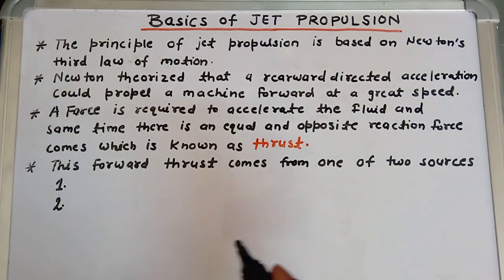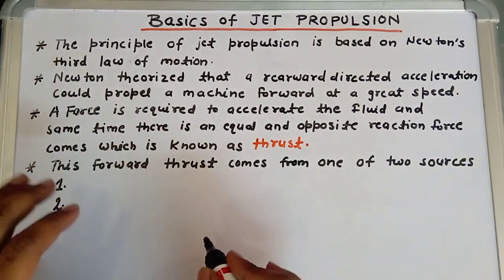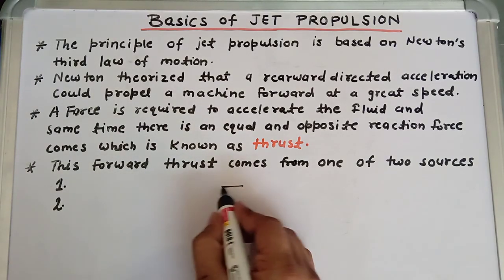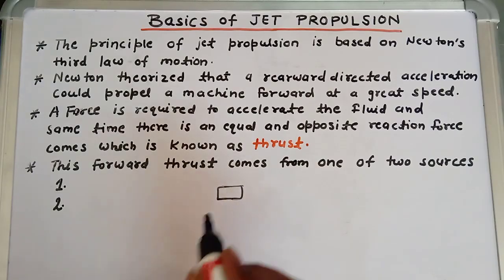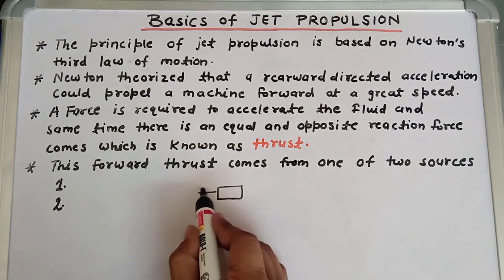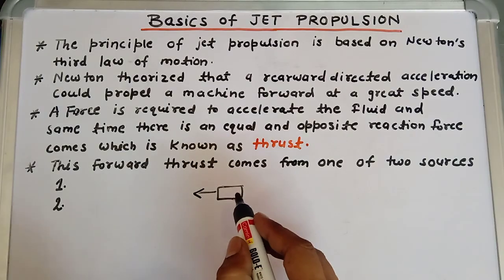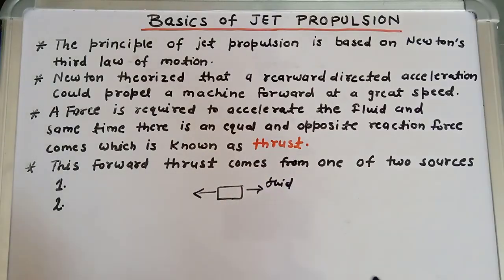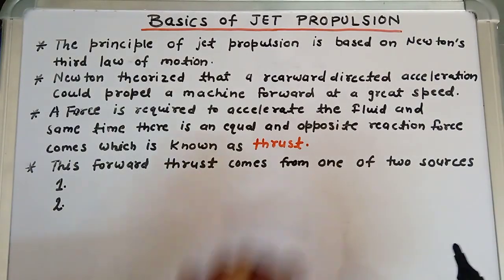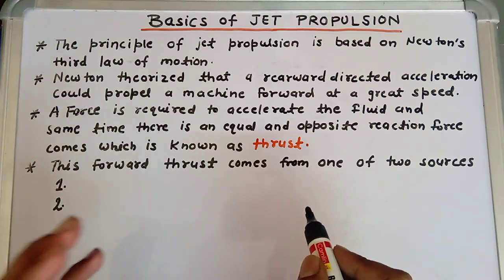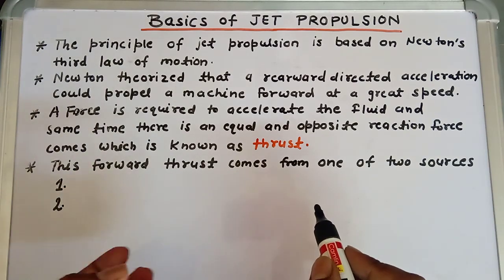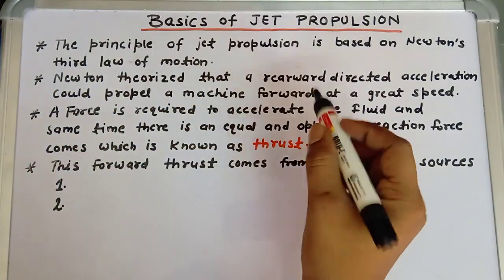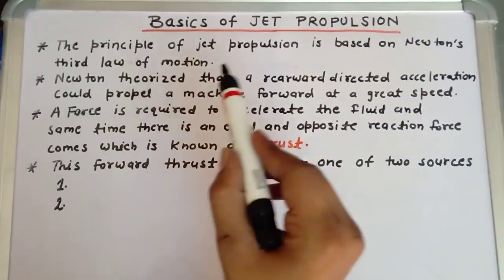First of all, let's discuss the meaning of jet propulsion. The basic meaning of jet propulsion is that suppose this is an object — the propulsion of the object in one direction is done by ejecting a fluid in the opposing direction. This is the concept and meaning of jet propulsion.